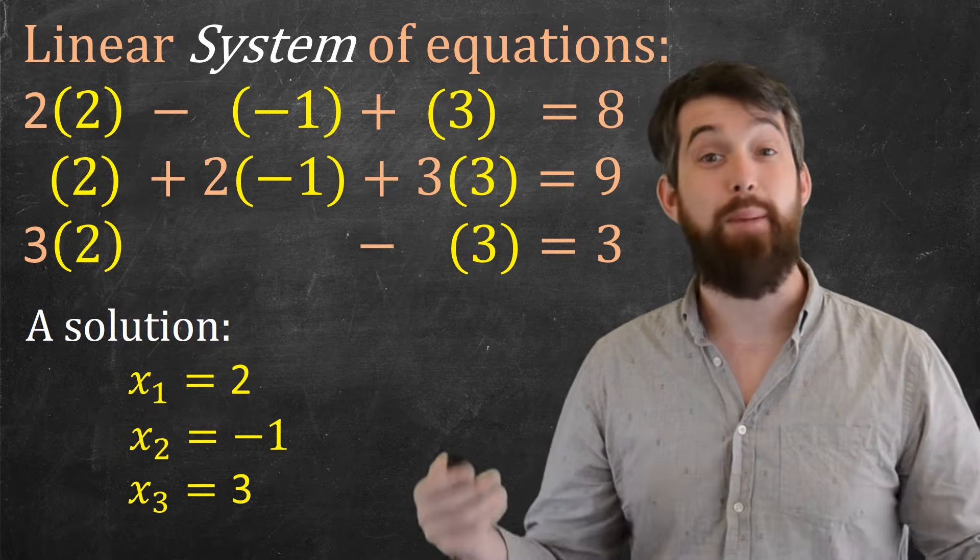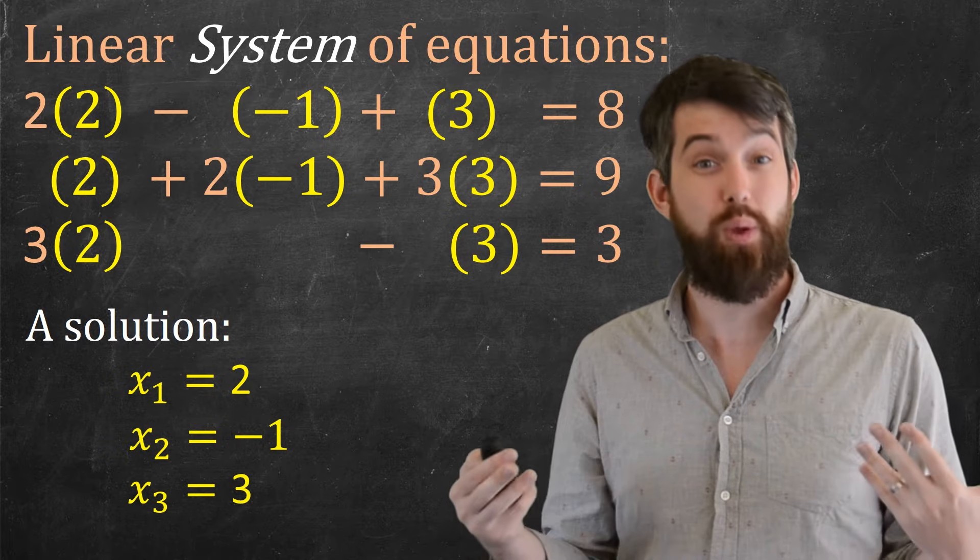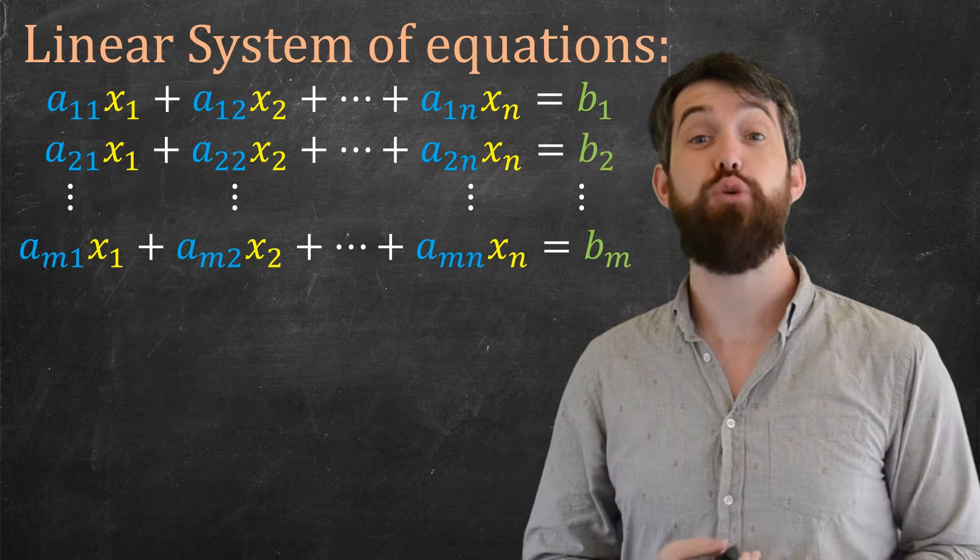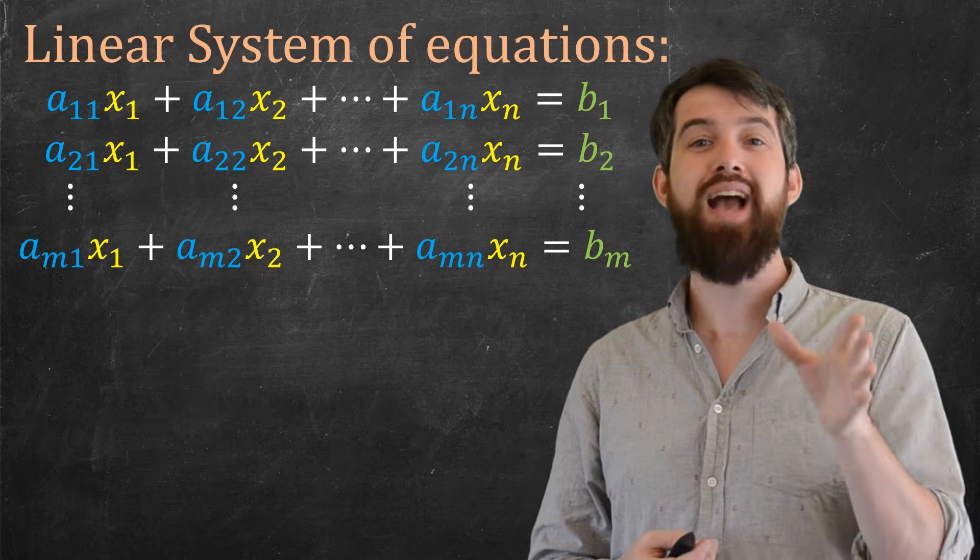Now, linear systems can get big and complicated. There can be many different rows, there can be many different variables. So we want a systematic way to express it. And our systematic way is this. It's using something called AIJ notation.